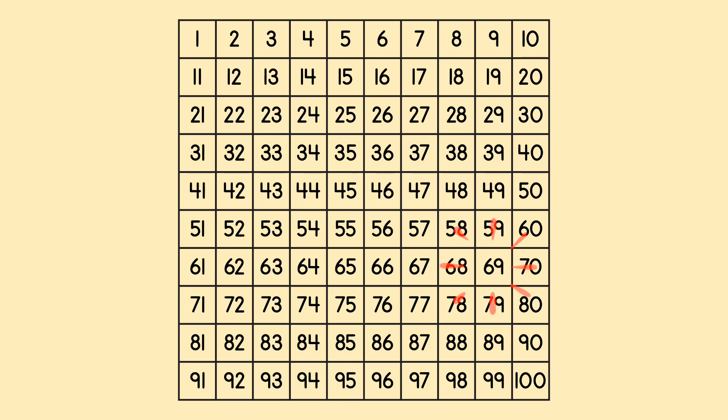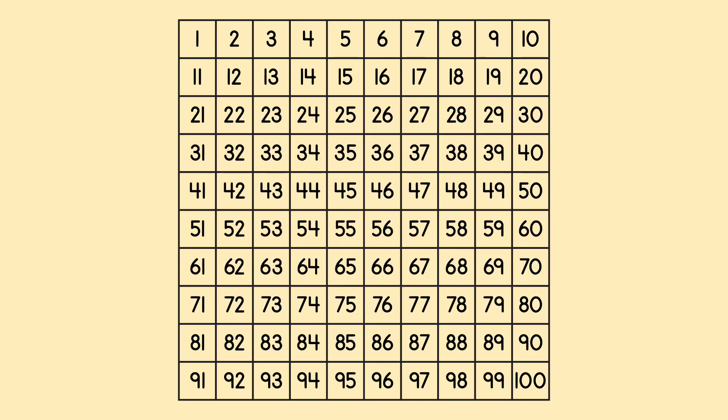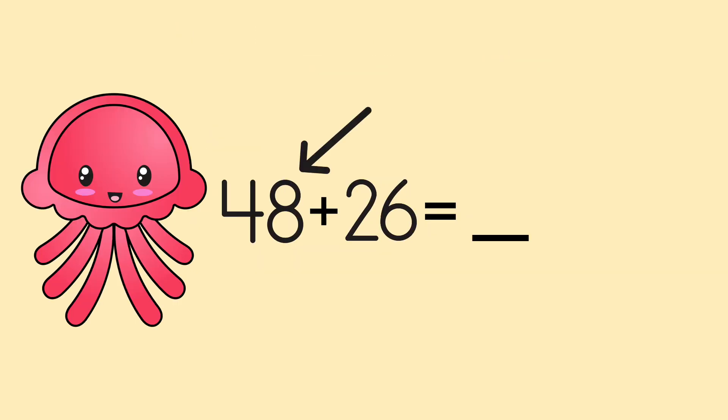1, 2, 3, 4, 5, 6. We used our shortcut for adding tens. 48 plus 26 equals 74.